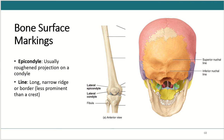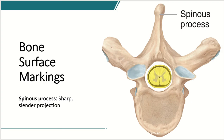We also have a line — a narrow, long ridge or border, just a little less prominent than a crest but similar. And then a spinous process — a sharp, slender projection — with a great example being the spinous process of a vertebra.